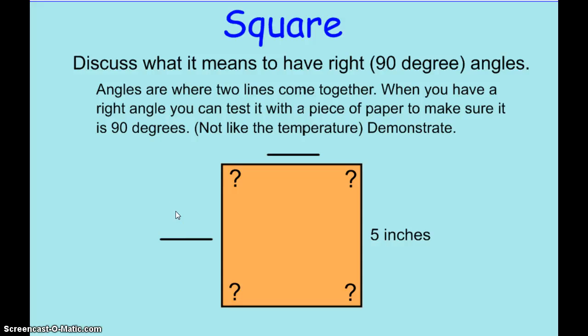So, something is a square if it has 4 sides and 4 angles. But it has to have 4 right angles, which means that these corners are 90 degrees. They are perfectly square.